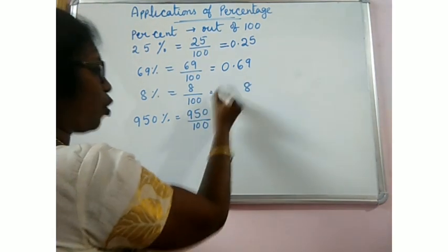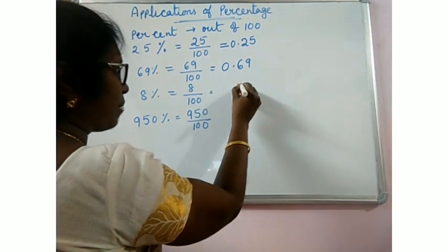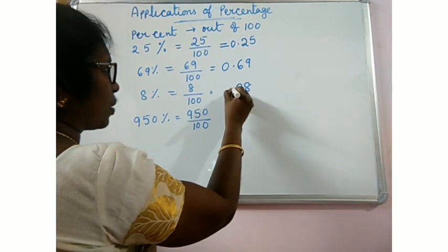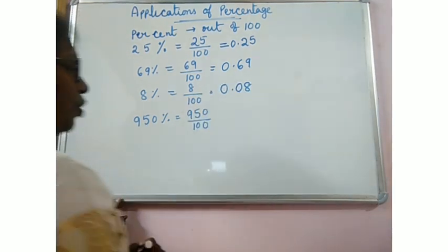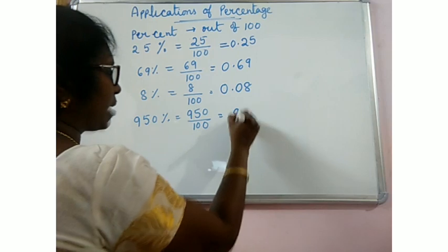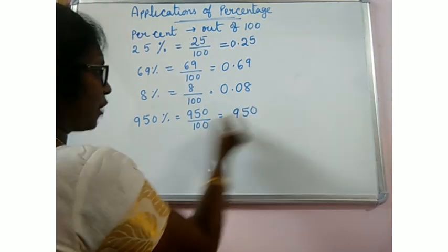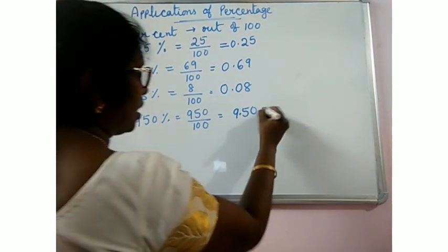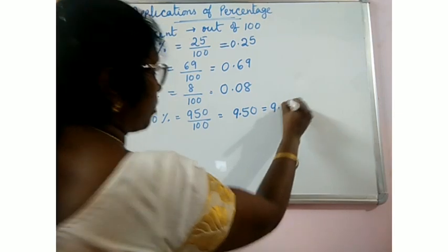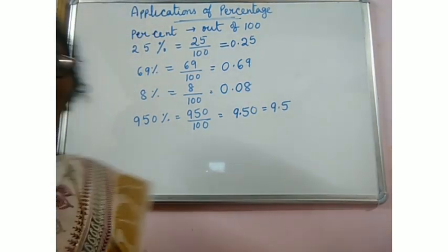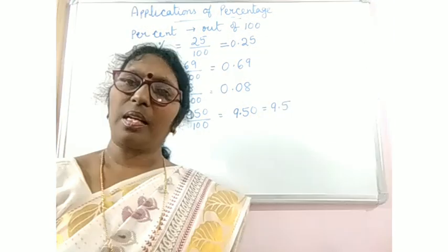8 by 100 means write 8. 100 means after two places, but here only one place is there. One more zero, write decimal and 0. Same way, write 950, after two places you put a decimal. That means it is becoming 9.5.